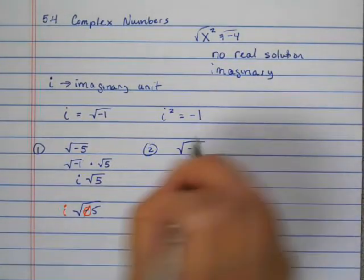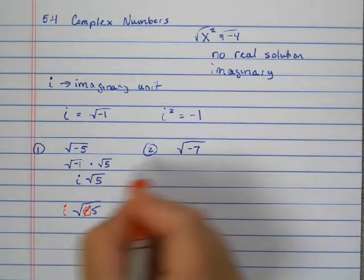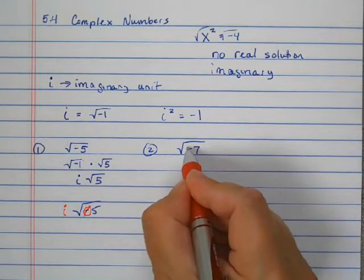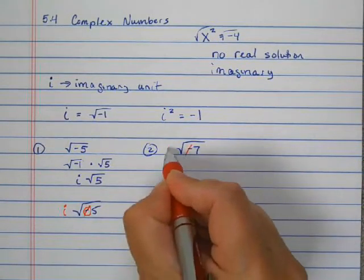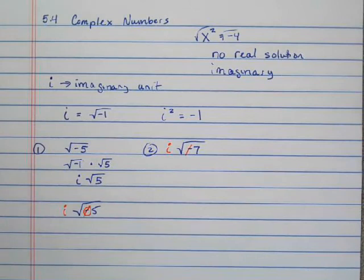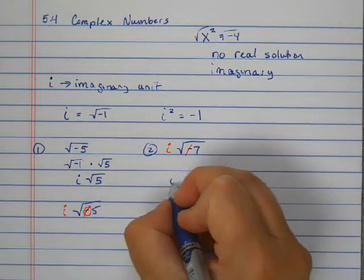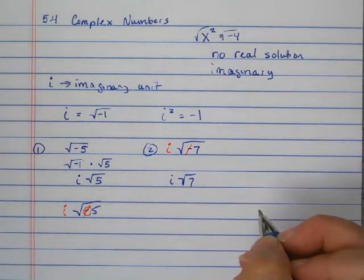Square root negative seven. So instead of doing this whole process, we know that when we have a negative, it's going to cross off and put an i on the outside. So the answer to this one would be i square root seven.